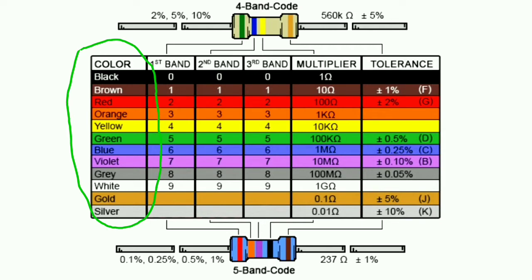The colors used in resistor color coding are: Black, Brown, Red, Orange, Yellow, Green, Blue, Violet, Grey, White, Gold, and Silver.